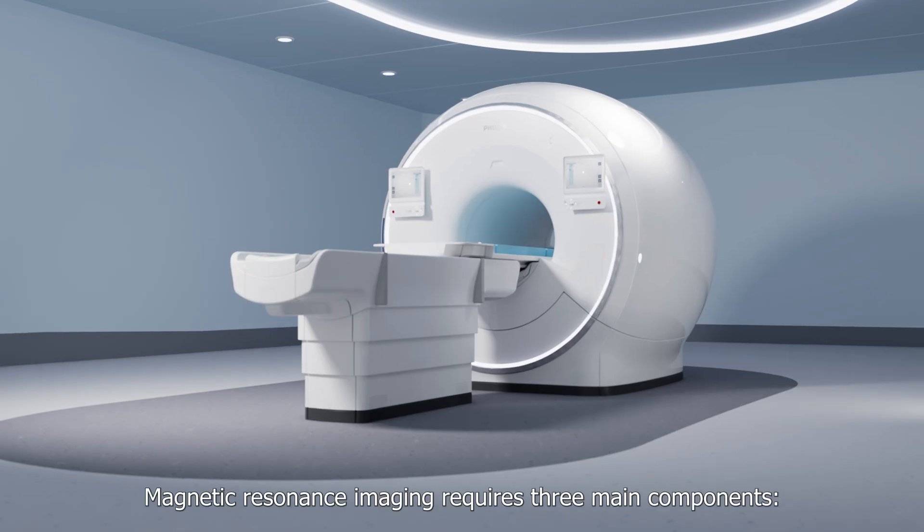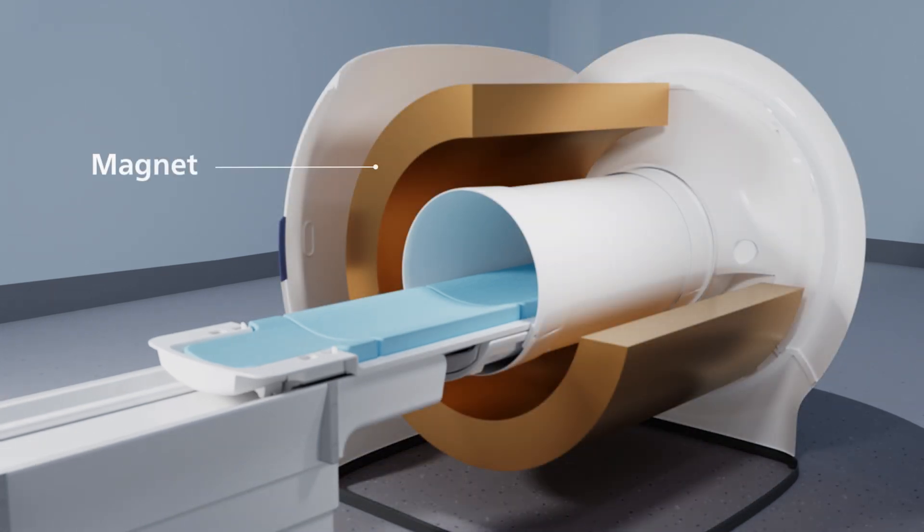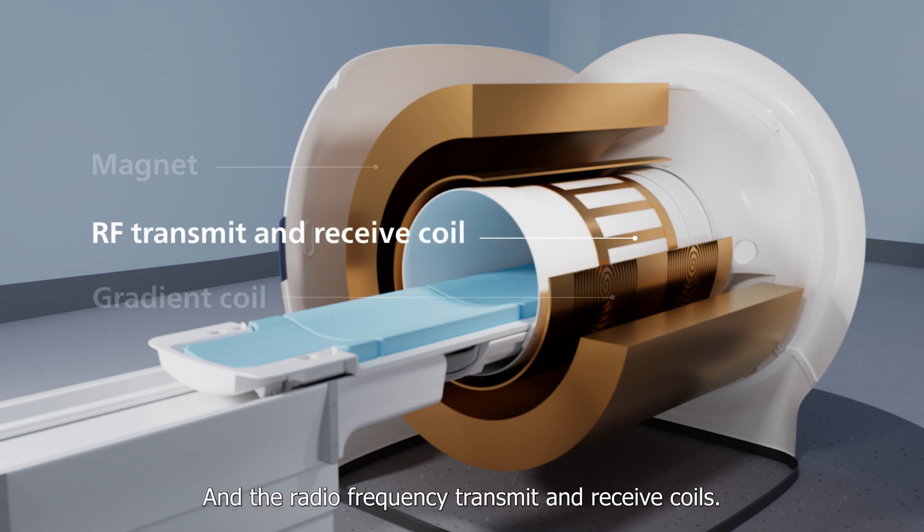Magnetic resonance imaging requires three main components: the magnet, the gradient coils, and the radio frequency transmit and receive coils.